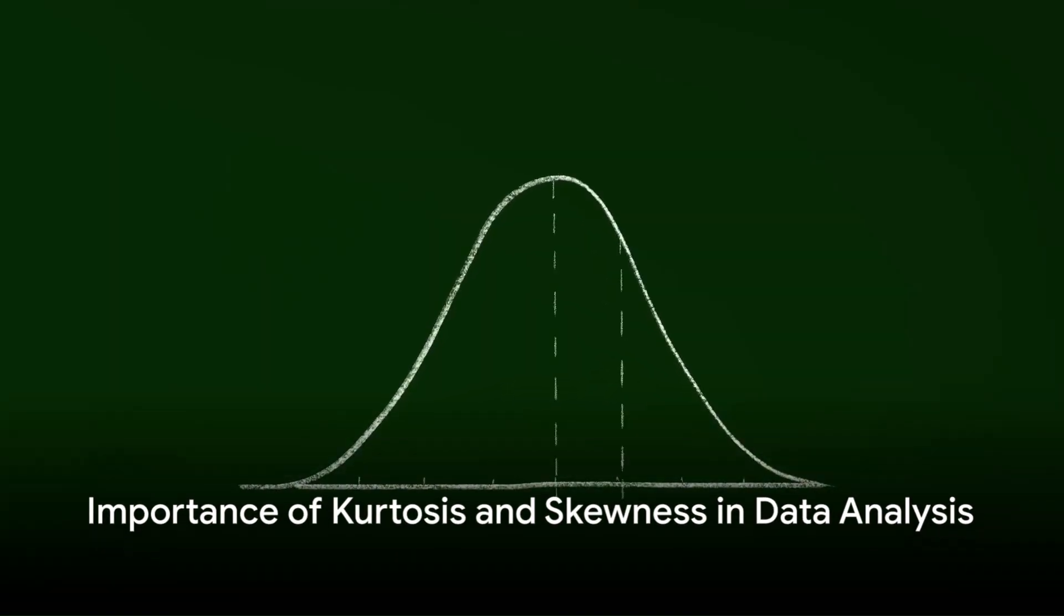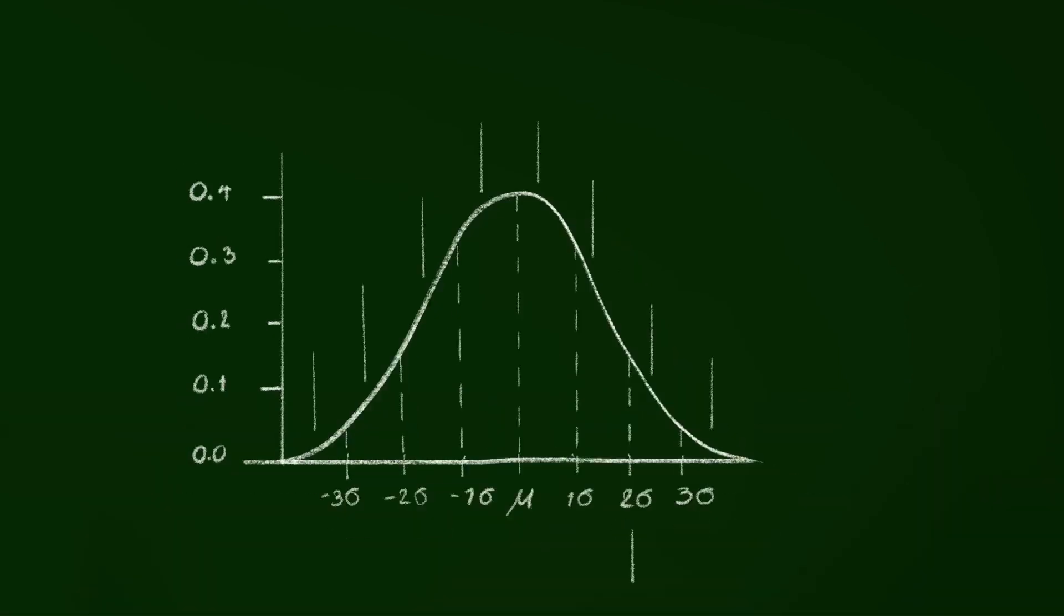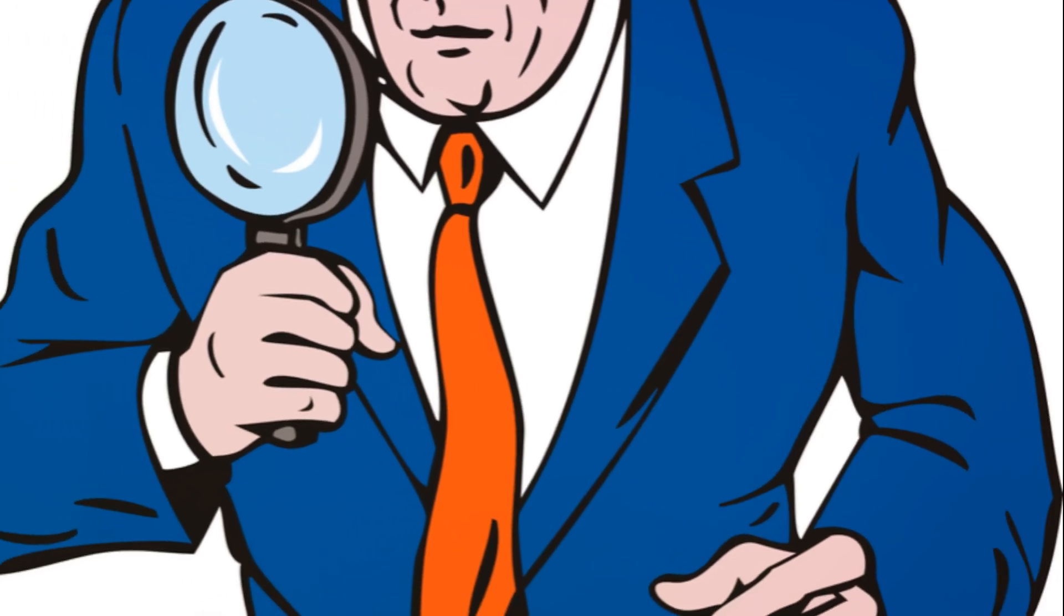Understanding skewness and kurtosis is crucial in data analysis. They are like two compasses guiding us through the wilderness of data, helping us identify potential biases and understand the underlying patterns. Imagine being a detective, and these are your tools to uncover hidden patterns.